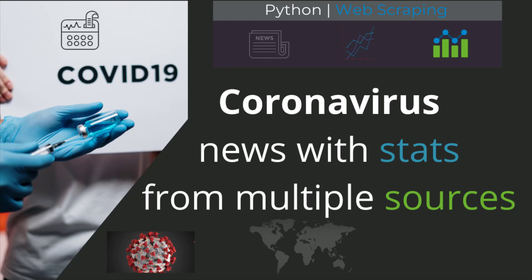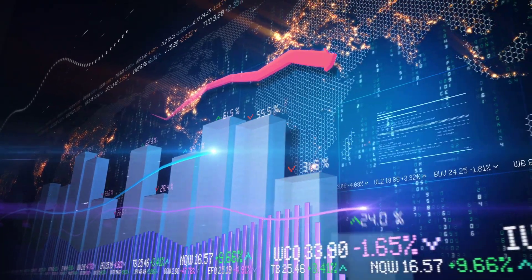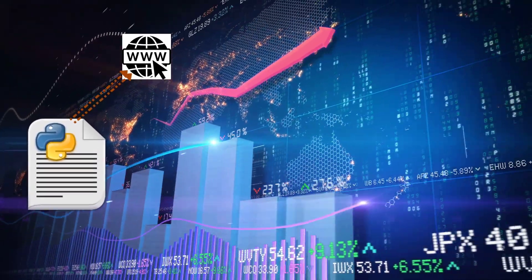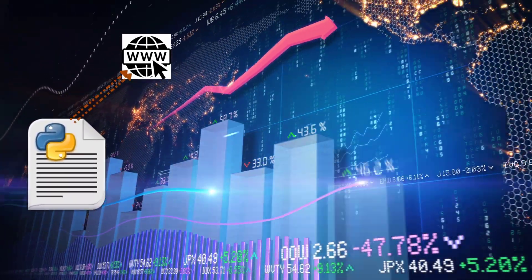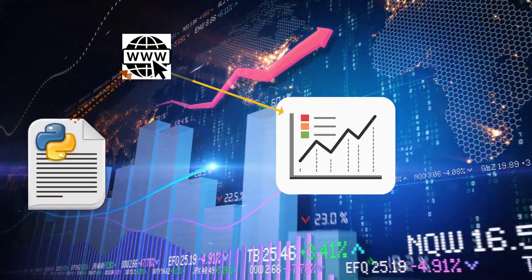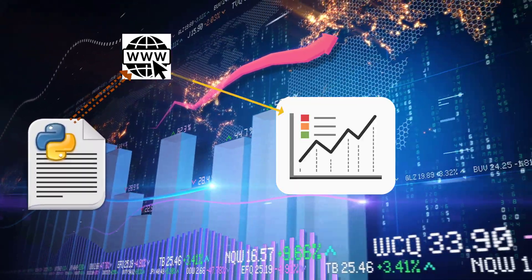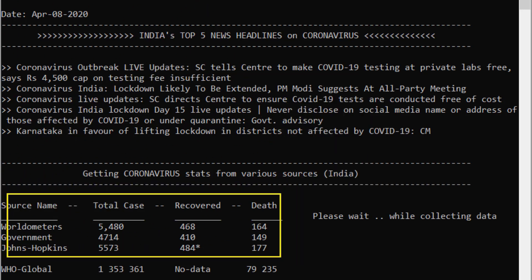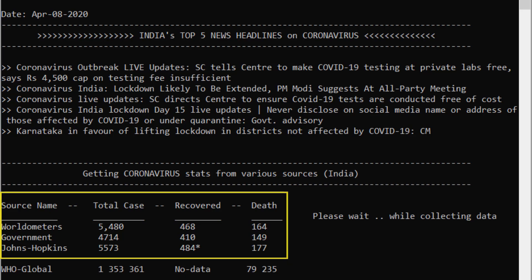Hello everyone and welcome to AI Python. I'm back with another project on Python web scraping. In this video you will learn a Python program that will collect the latest news headlines about coronavirus, as well as various stats like total number of active cases, how many people have survived or cured, and how many have lost their lives. This program will also display all those stats on the screen.